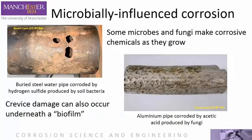Crevice corrosion can occur underneath colonies or biofilms of bacteria and fungi. However, many microbial and fungal species produce corrosive substances as they grow, which can attack metals, and this is called microbially influenced corrosion. A common form of soil microbe is sulphate-reducing bacteria — these are the ones that make rotten egg gas, hydrogen sulphide, in stagnant water and waterlogged ground. Unfortunately, hydrogen sulphide is extremely corrosive to iron, steel and many other metals, as can be seen in the holes caused by this damage on the left. The right-hand image shows colonies of fungi that produce acetic acid, which corrodes away the aluminium.